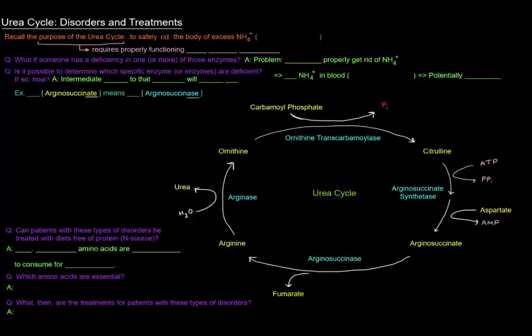Okay, so if you recall, the purpose of the urea cycle was to safely rid the body of excess ammonium ion because it is toxic. And of course, the urea cycle requires properly functioning urea cycle enzymes because those enzymes are what actually allow the processing of that excess ammonium ion.